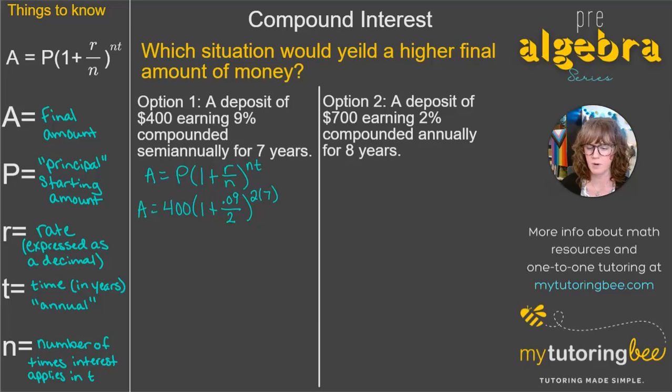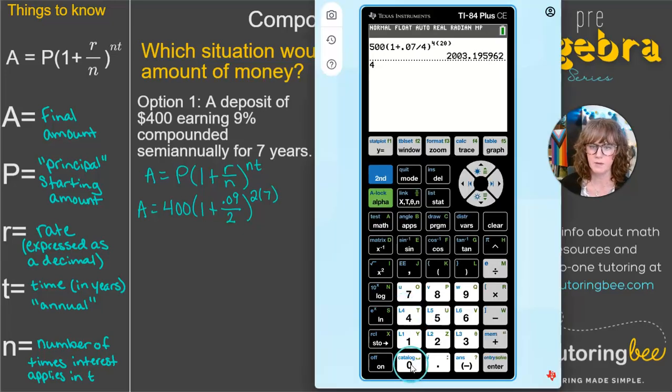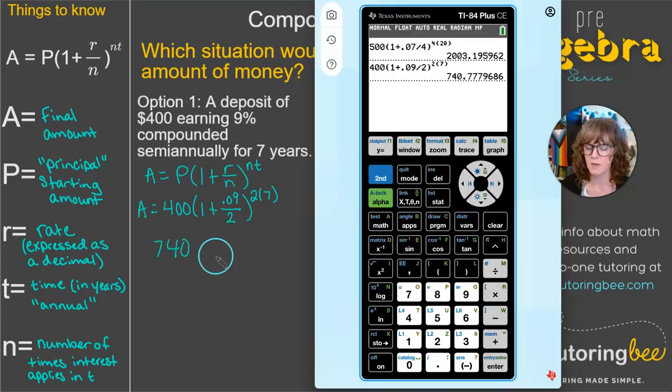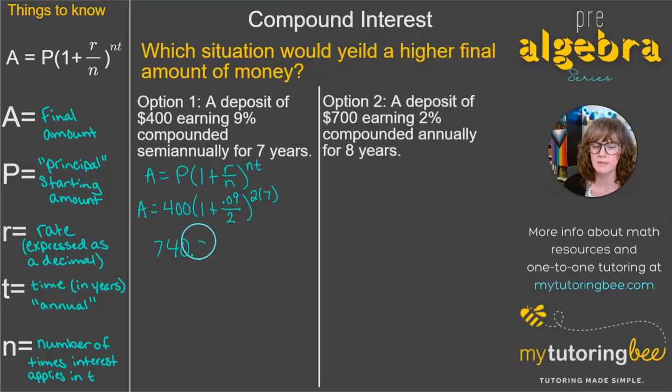Let's go ahead and pull up our calculator again. All right, let's go ahead and put those numbers in. 400 times 1 plus 0.09 over 2, all raised to the 2 times 7 power. So we get $740.78.